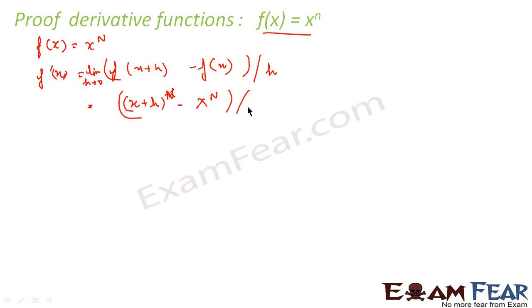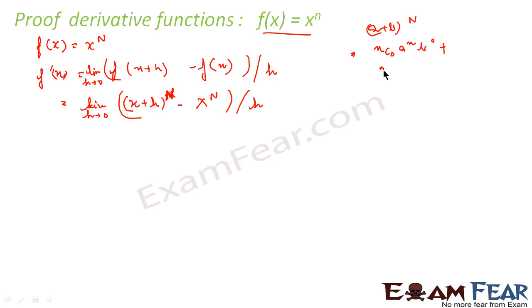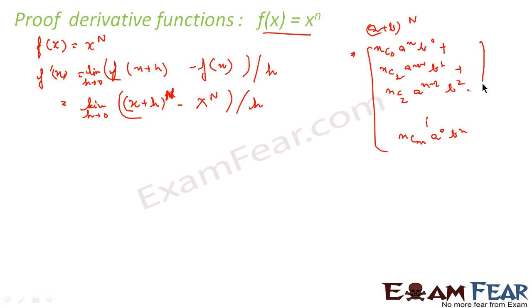So we have the limit as h tends to 0 of (x+h)^n minus x^n, all divided by h. We want to expand (x+h)^n. We expand using the binomial formula: (a+b)^n equals nC0·a^n·b^0 plus nC1·a^(n-1)·b^1 plus nC2·a^(n-2)·b^2 ... plus nCn·a^0·b^n.